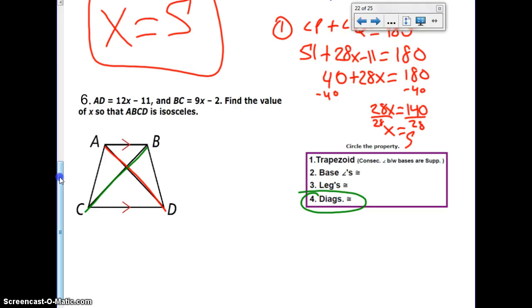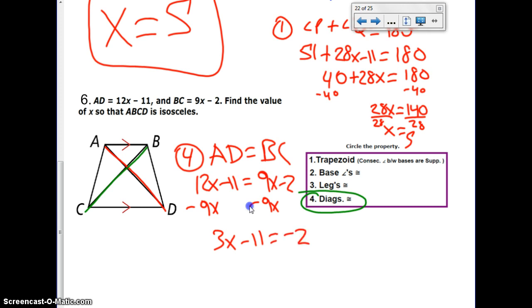By property 4, all we have to say is hey, AD is equal to BC. AD is 12X minus 11, and BC is 9X minus 2. So from this point, we're going to get all of our like terms on one side. So let's subtract 9X. And you're going to get 3X minus 11 equals negative 2. Then we're going to add by 11. I'll finish it over here. 3X is going to equal 9. Get X by itself. We end up with X equals, oh, what happened here? I'll write it up here. X equals 3.